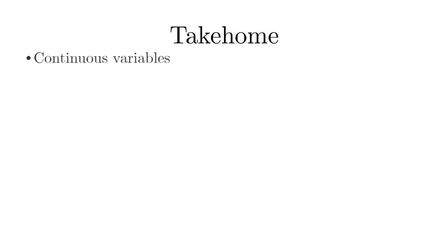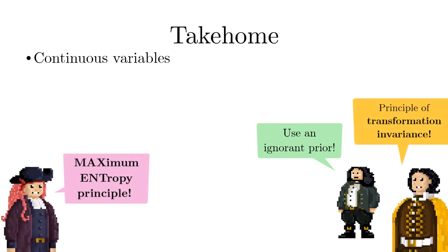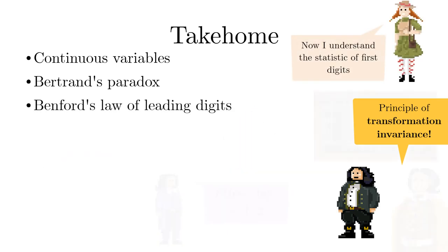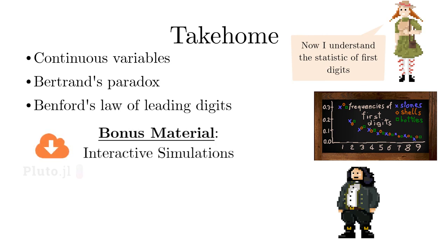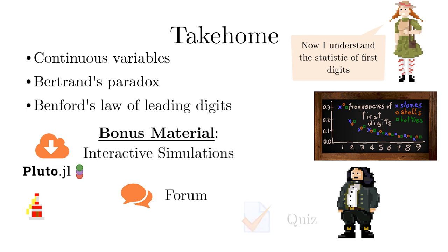This concludes lesson 8. We have learned about continuous variables and how to assign prior probabilities using the principle of transformation invariance or the maximum entropy principle. We have discussed Bertrand's paradox and now know why Benford's law describes the leading digit of counting lists and measurement tables. Check out the interactive Pluto notebooks to solve the lighthouse problem, to do your own Benford computer experiments, and to experiment with various popular distributions. Feel free to ask questions in the forum and test your knowledge in the quiz.